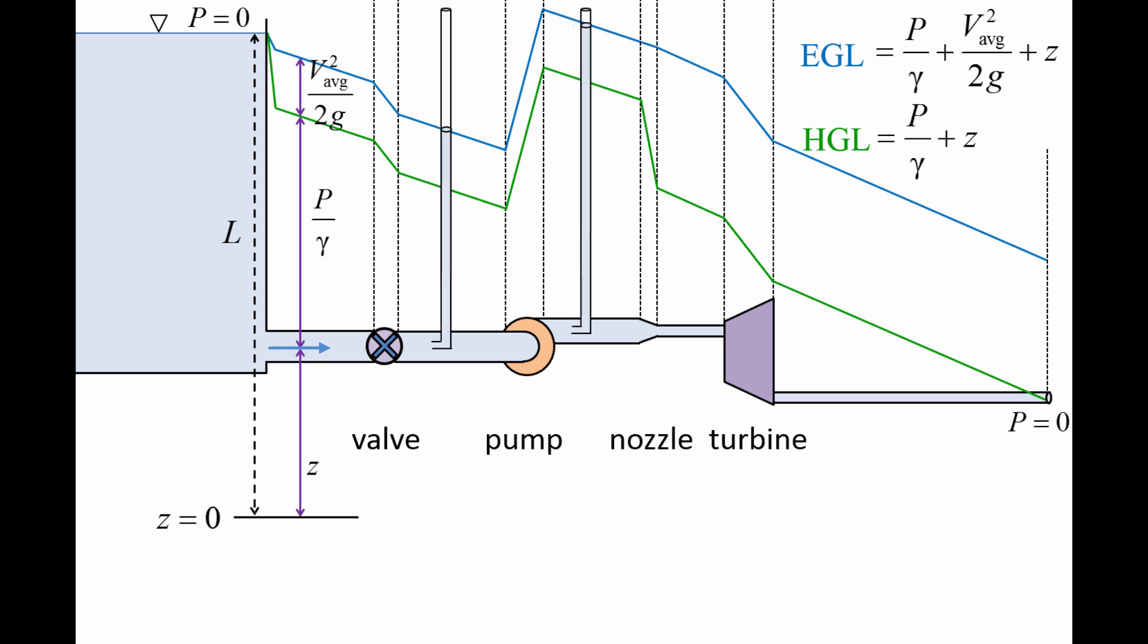The EGL curve can be observed by using a series of L-shaped tubes, which are called pitot tubes, in the pipe system. The height of the water line in the pitot tubes is equal to the energy grade line at those points.